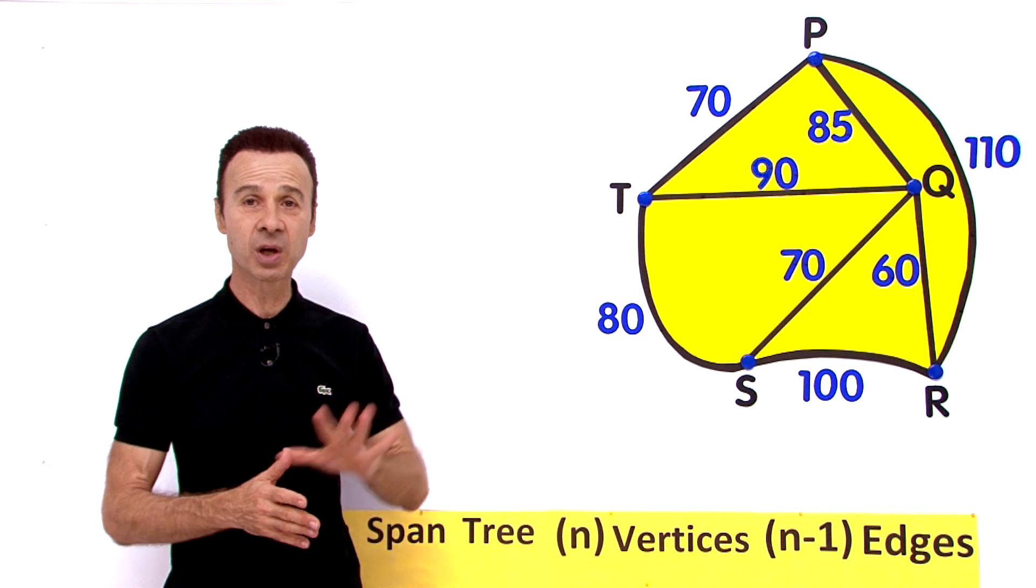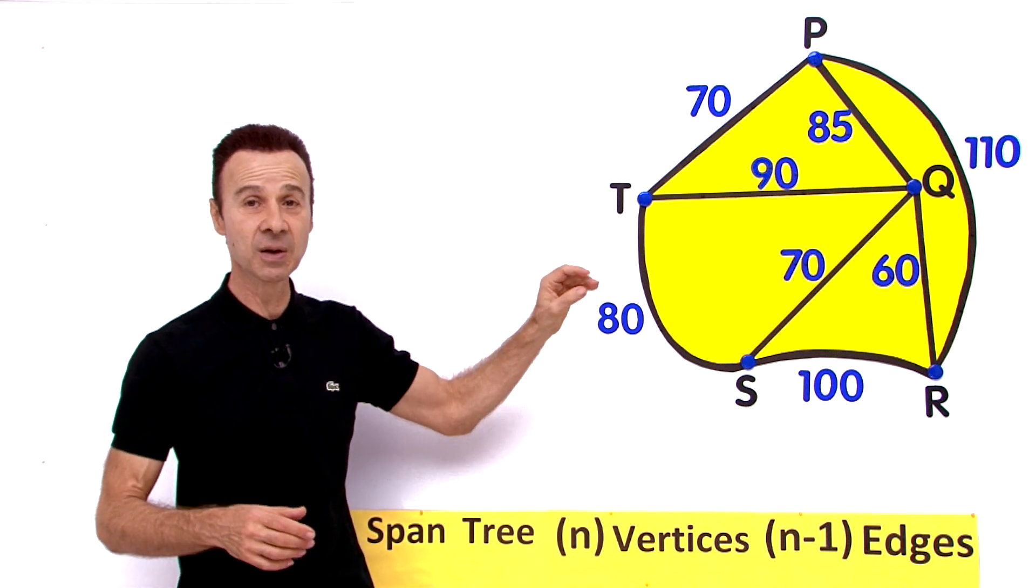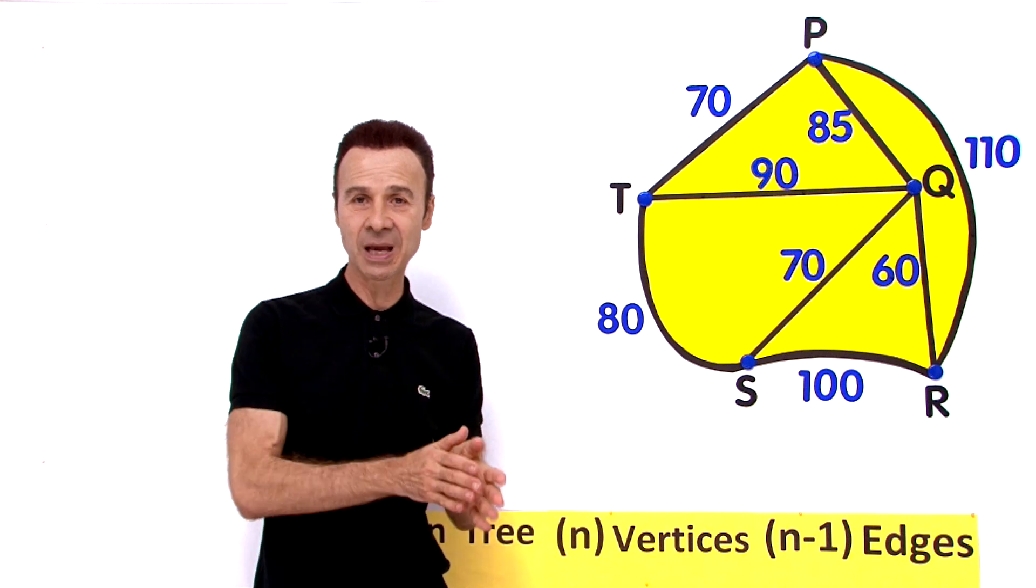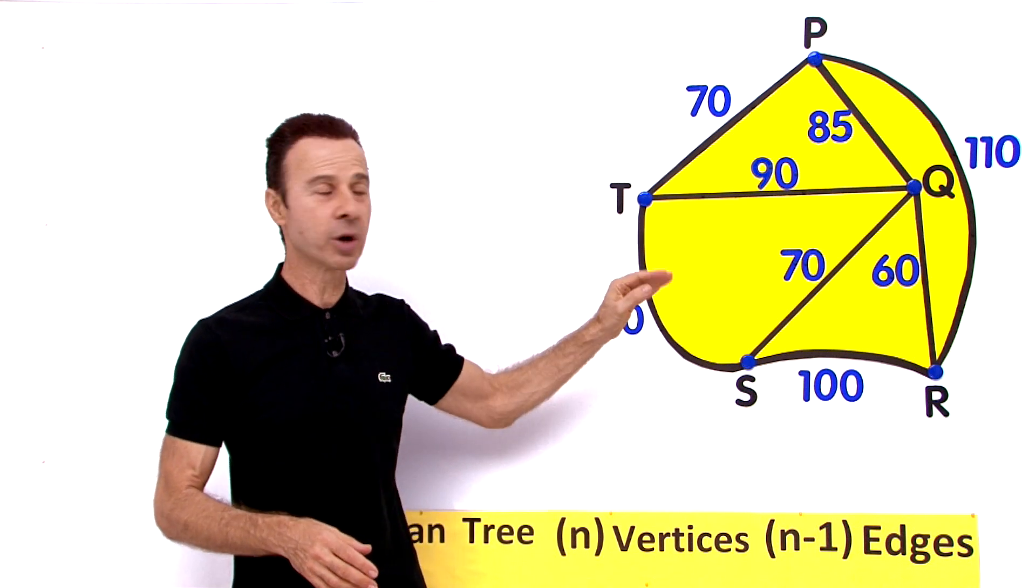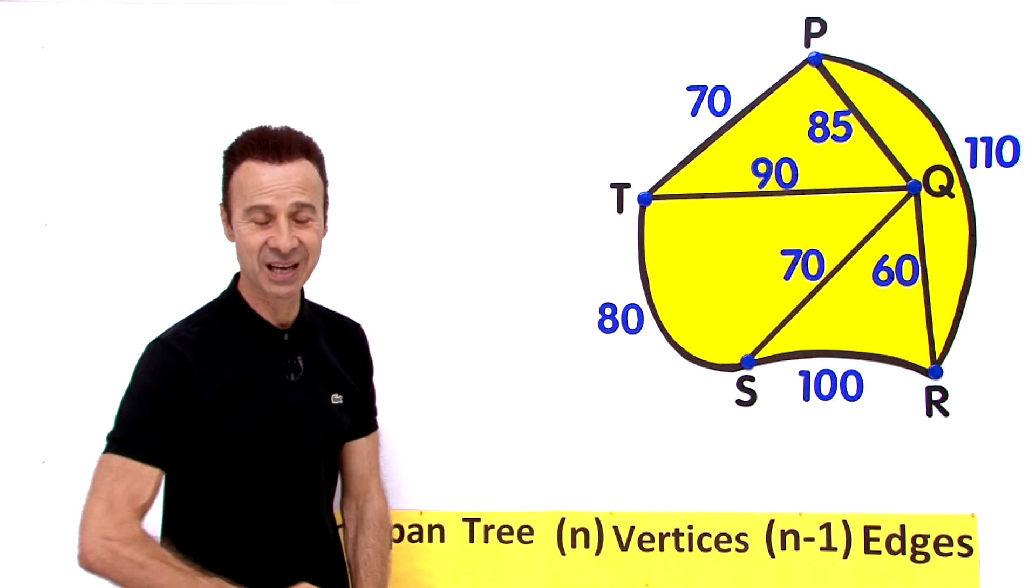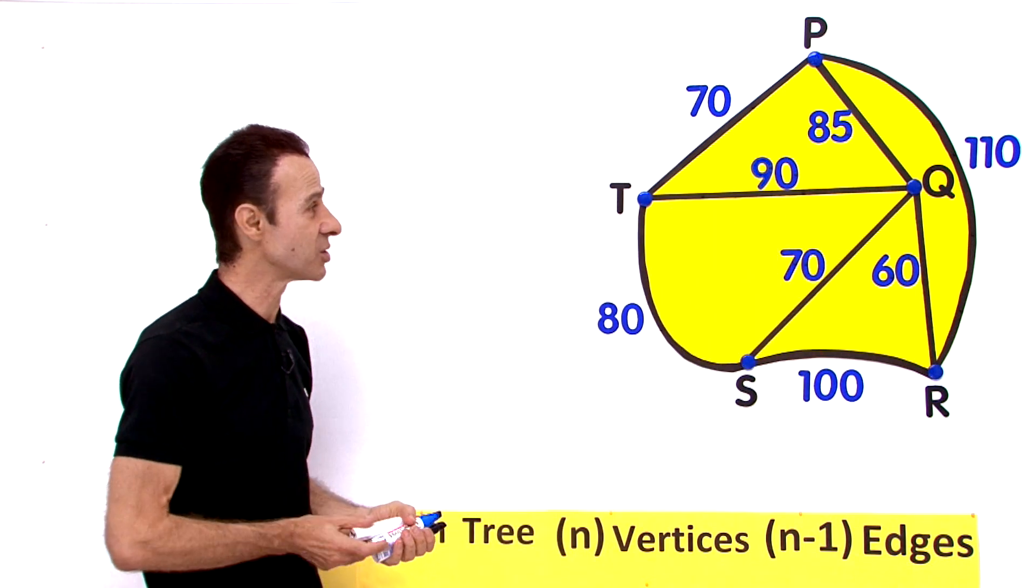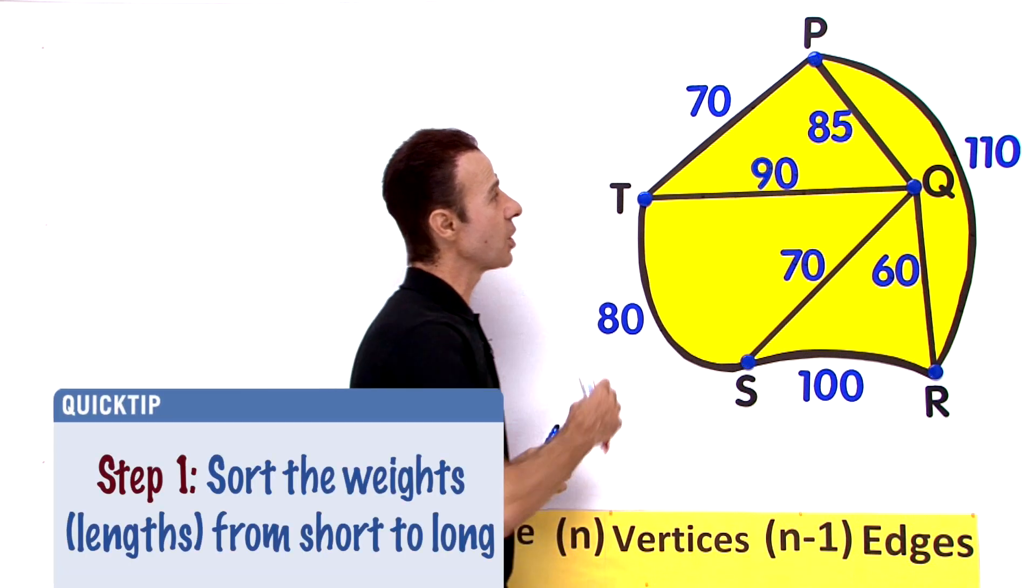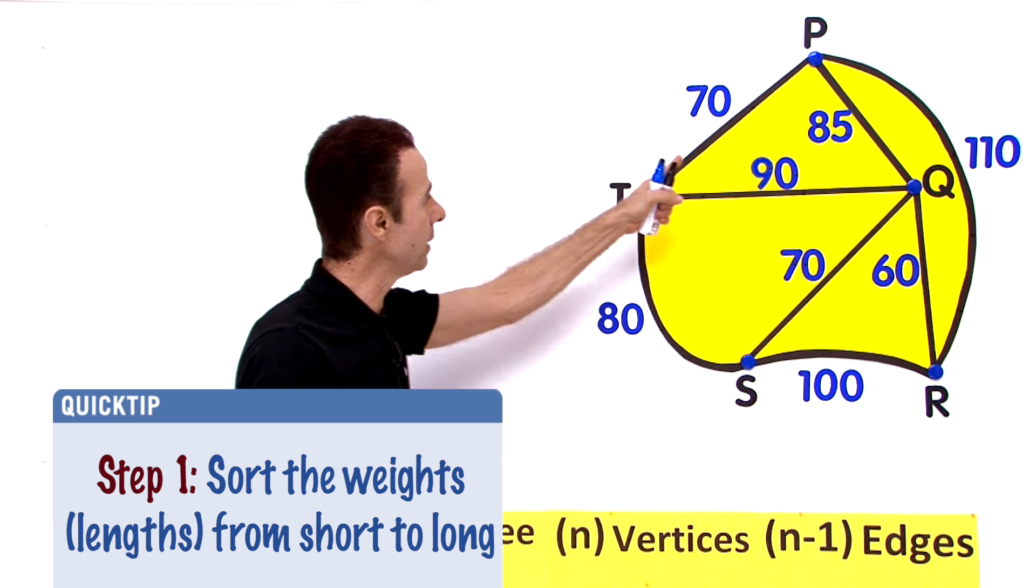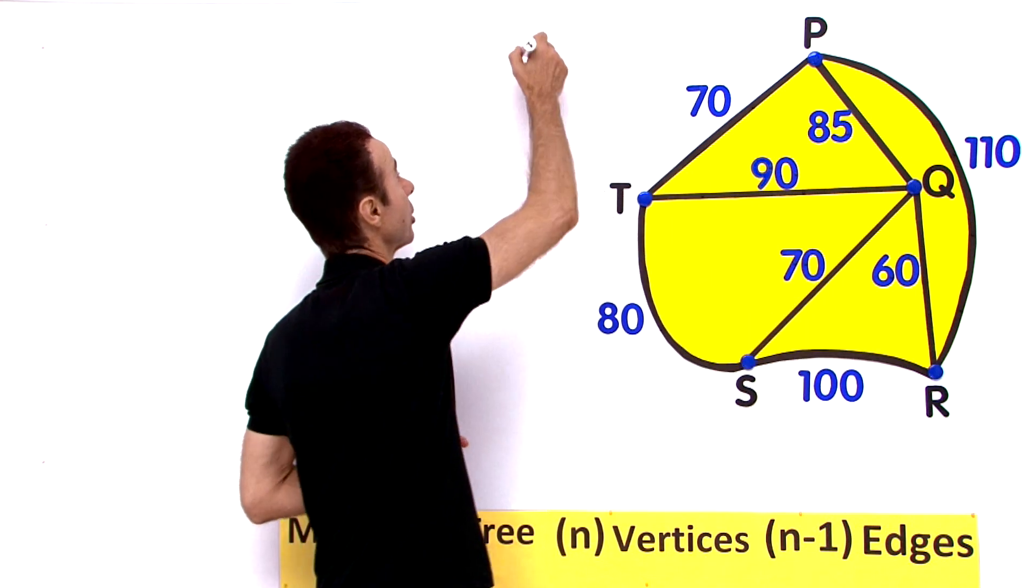So how do we go about this? Well we are going to do this example by inspection, kind of like Kruskal's algorithm which is a precise series of steps. Step one is to sort and order all the weights from lowest to highest. So let me go ahead and start to sort the weights on each particular edge. We are looking for the lowest weight and as we look at this diagram the lowest weight would be 60 right over there.